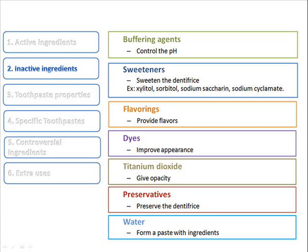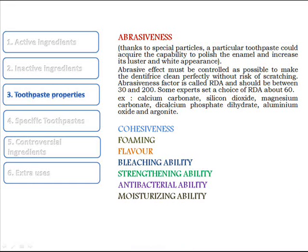We also find buffering agents that control the pH. Sweeteners sweeten the dentifrice — examples include xylitol, sorbitol, sodium saccharine, and sodium cyclamate. Flavorings provide flavors, dyes improve appearance, titanium dioxide gives opacity, preservatives preserve the dentifrice, and water is used to form a paste with the ingredients.